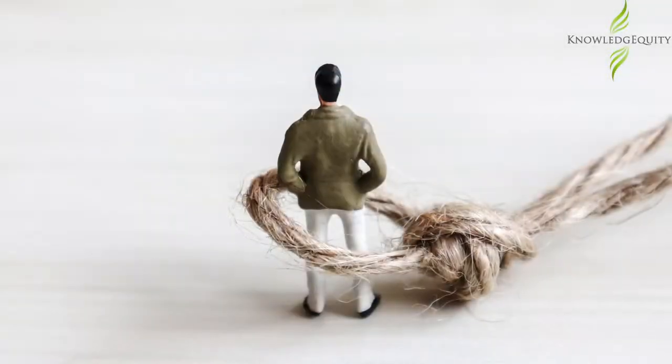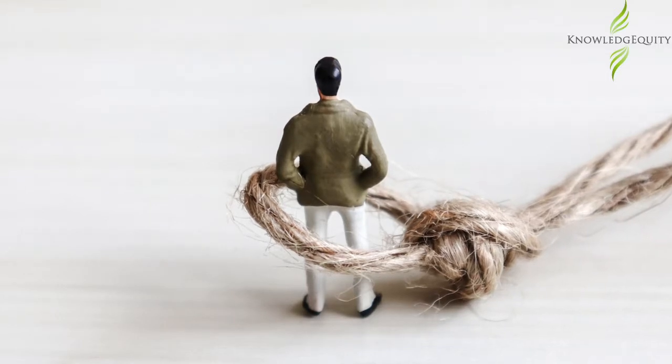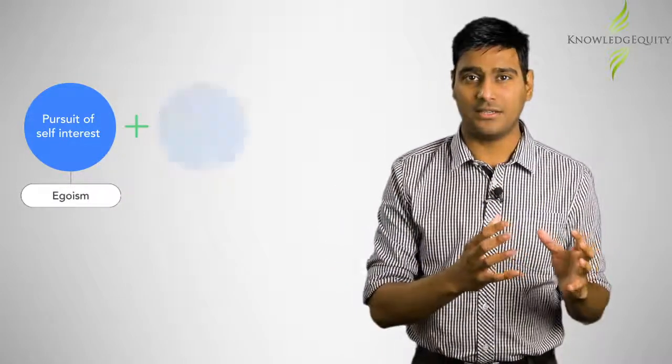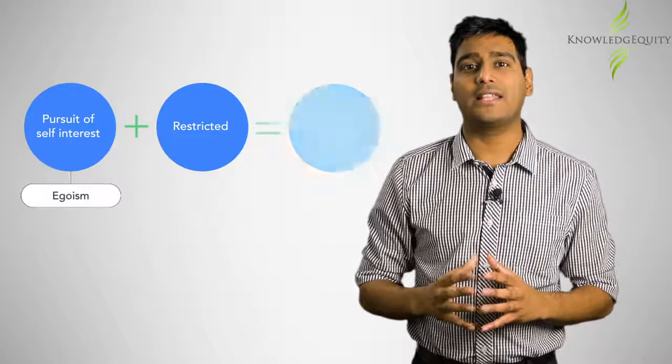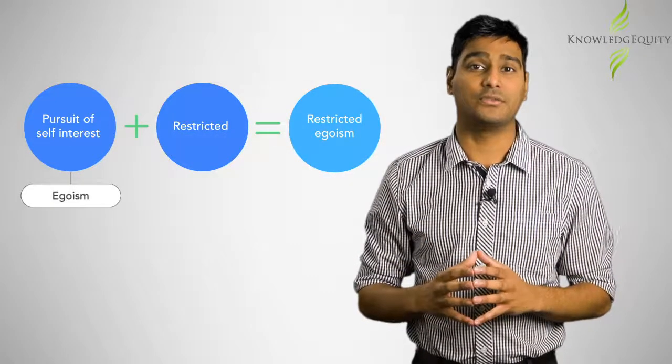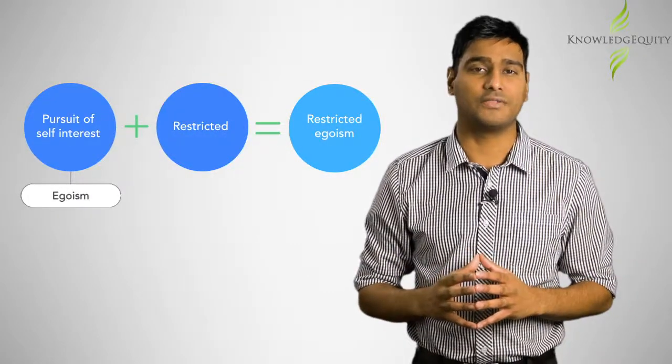To restrict something is to place limits or constraints on it. We know now that egoism is a pursuit of self-interest. If we add restricted to egoism, it means that there are limits or constraints on the person who decides to pursue his or her self-interest.